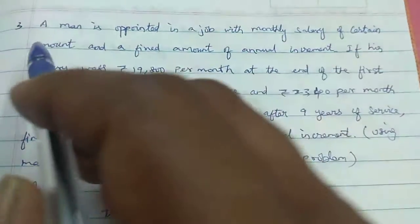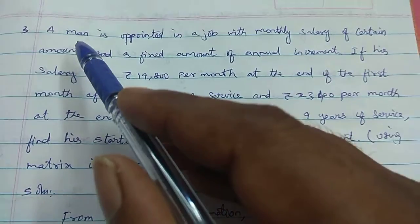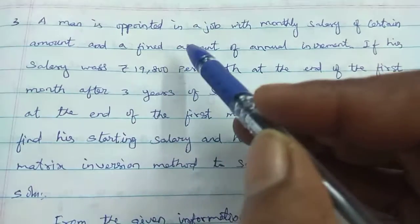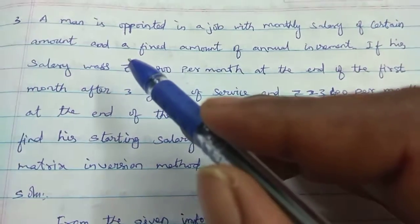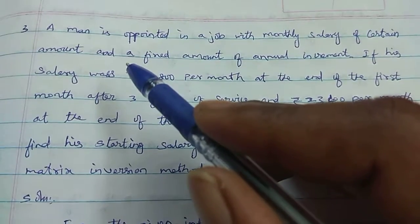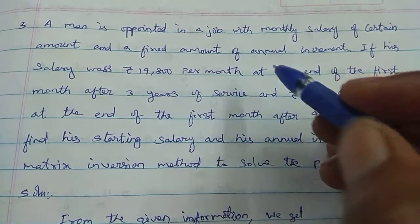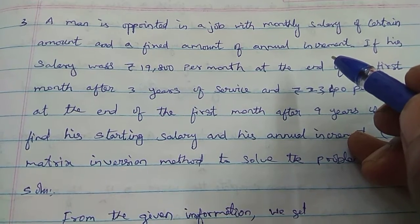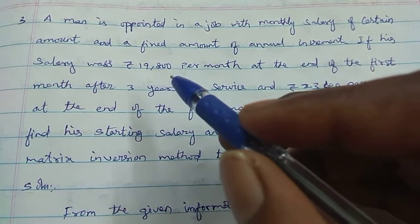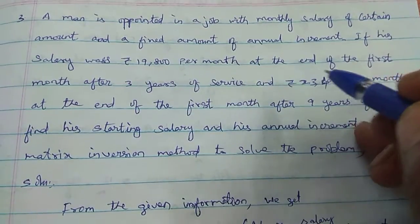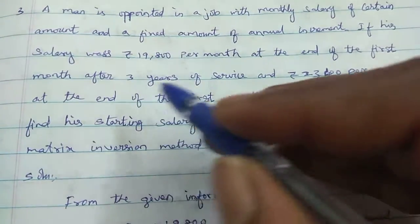Next is 1.3 sum number 3. A man is appointed in a job with monthly salary of certain amount and a fixed amount of annual increment. If his salary was 19,800 per month at the end of the first month after 3 years.